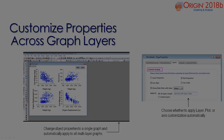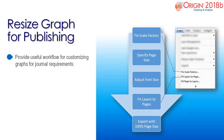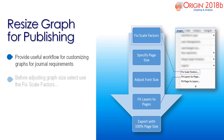We also offer a couple of new features that help with resizing your graph dimensions for journal requirements. Here is a suggested workflow for resizing your graph for publication. First, go to the graph menu bar and select fixed scale factor in order to maintain absolute size of the graph elements.